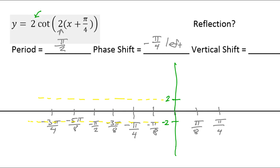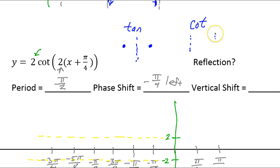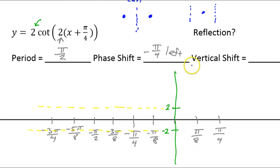I have memorized a couple of things. For the tangent function, it begins and ends with a point, and there's an asymptote in the middle. On the other hand, for the cotangent function, the period begins and ends with an asymptote, and there's a point right in the middle. This is a cotangent function, so every period should begin and end with an asymptote and have a point right in the middle on the midline.